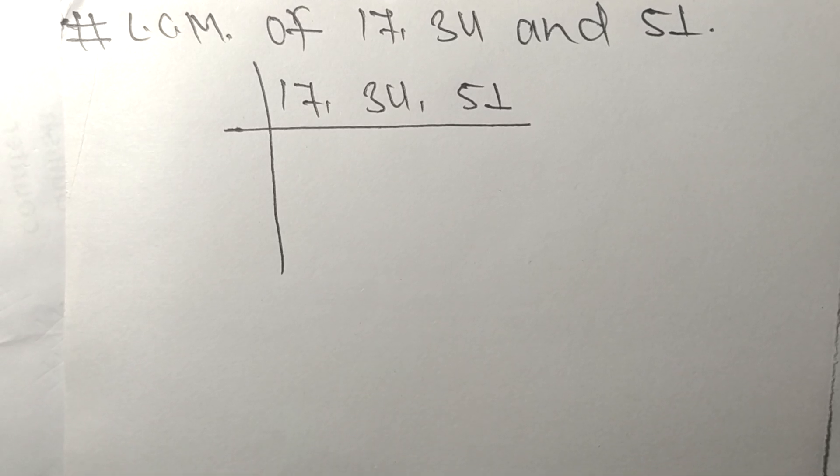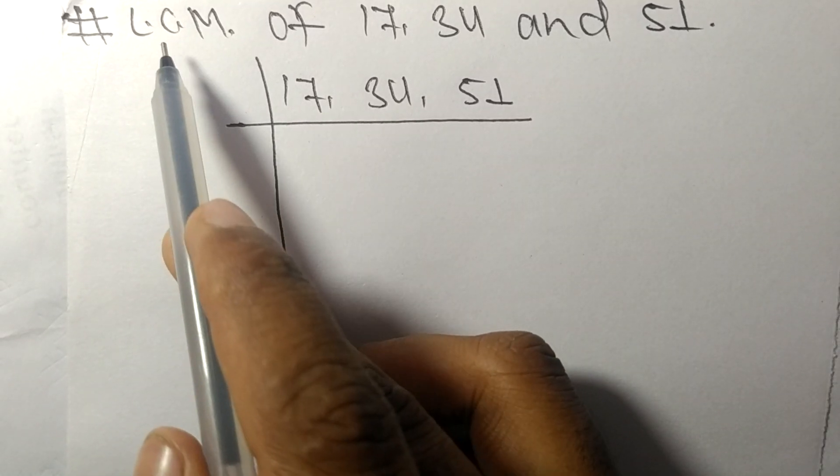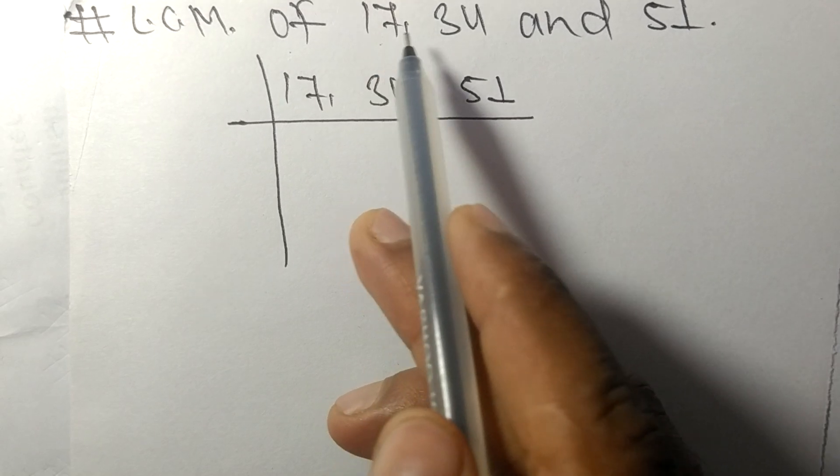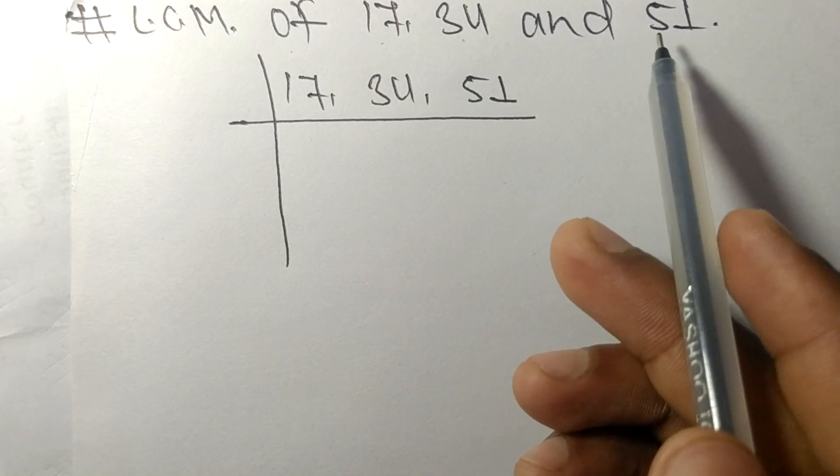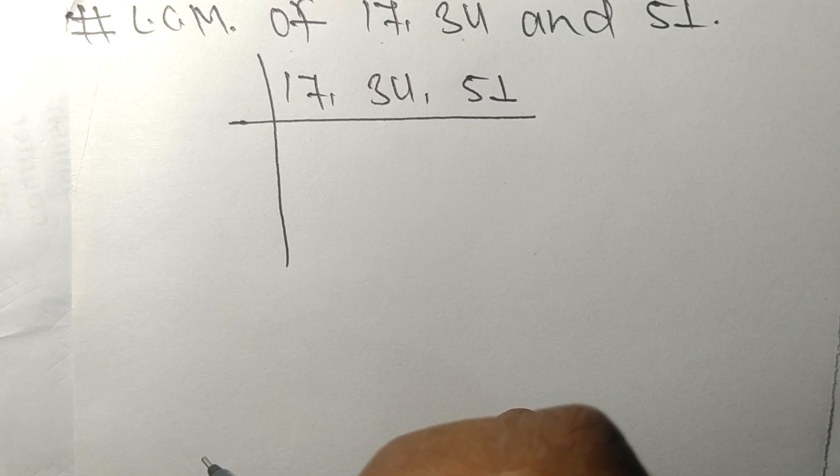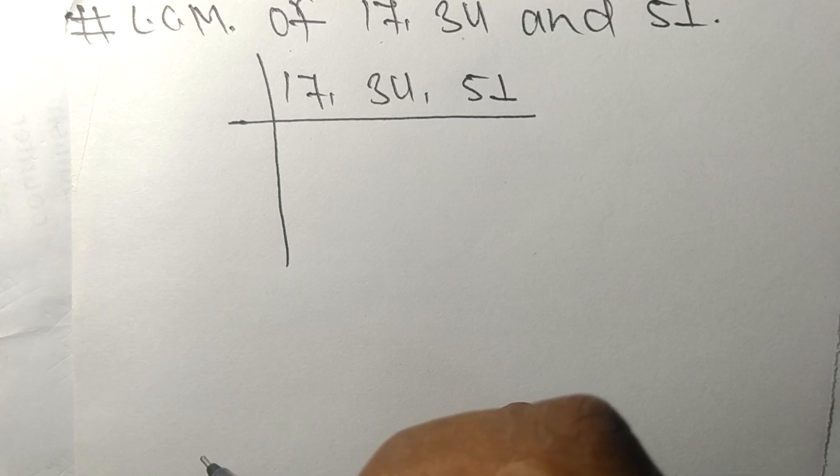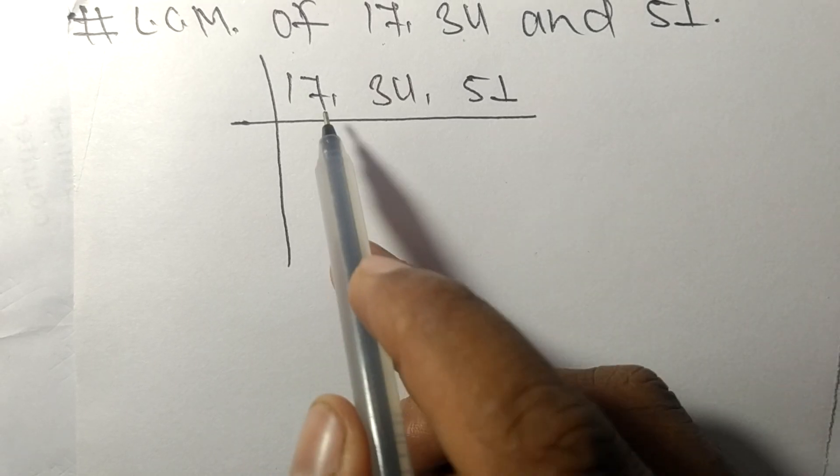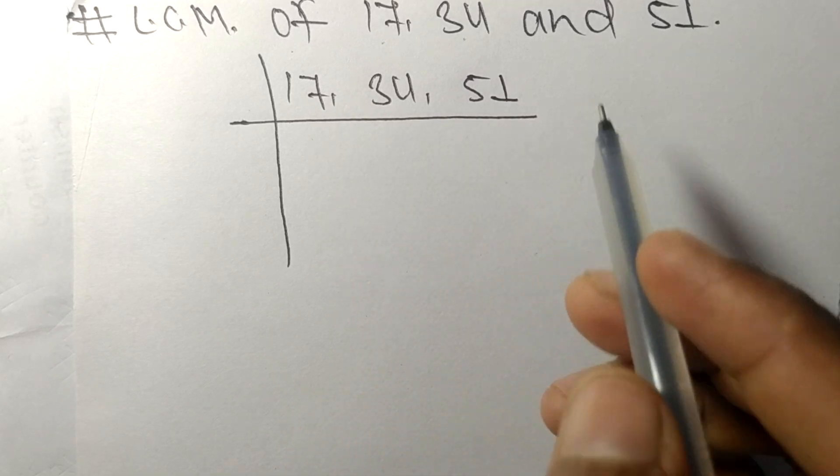So today in this video we shall learn to find the LCM of 17, 34, and 51. To find LCM we have to choose the lowest number that can exactly divide at least any two of these numbers.